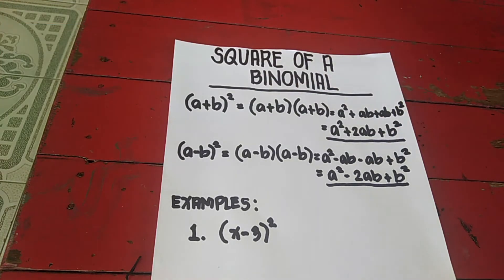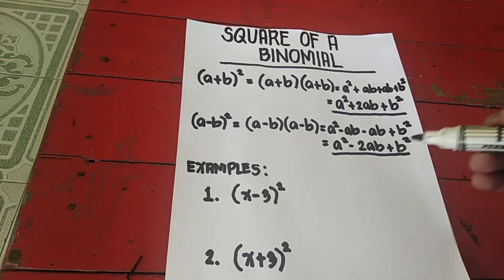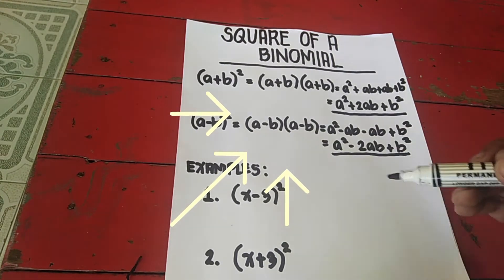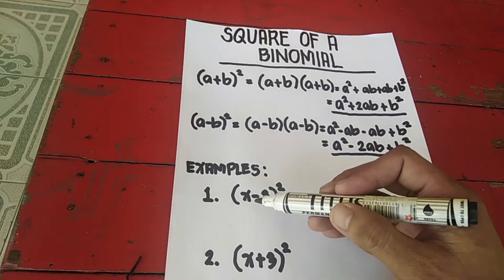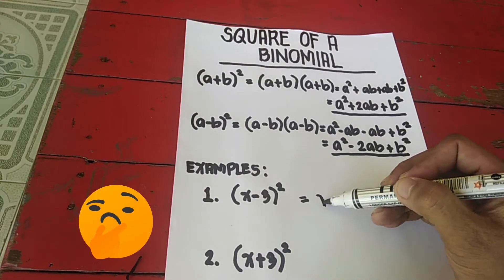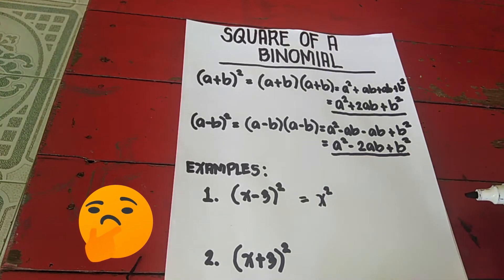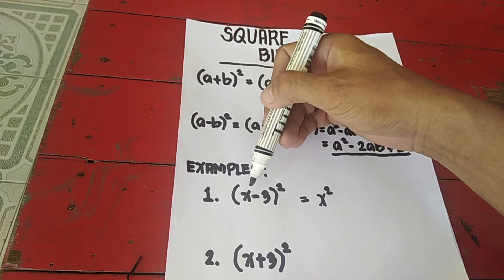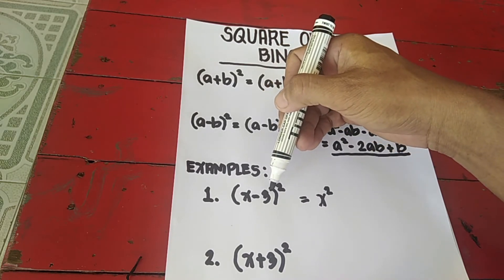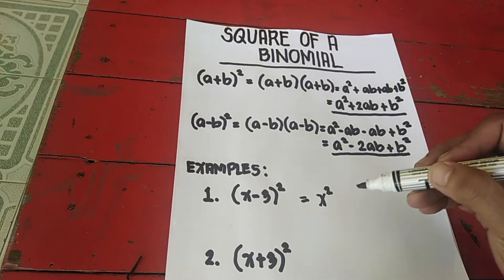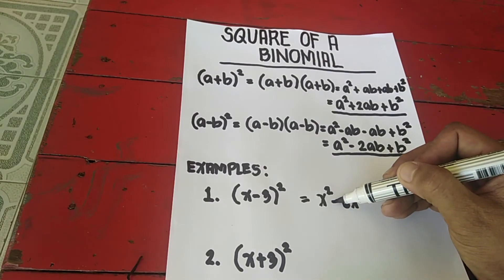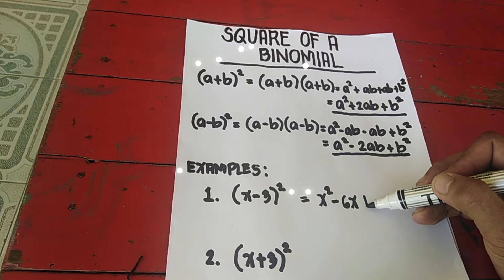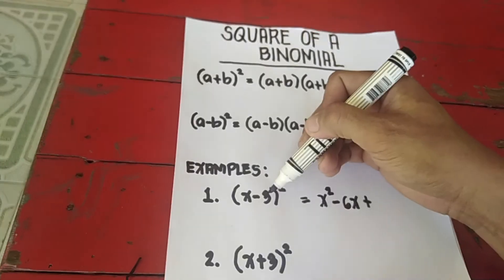Let's apply it to our first example: (x − 3) squared. First, square the first term — x squared. Then multiply x times 3 to get 3x, times the constant 2, so that is 6x. The sign is minus, so this is minus 6x. The third term is always positive — square 3, which is 9.